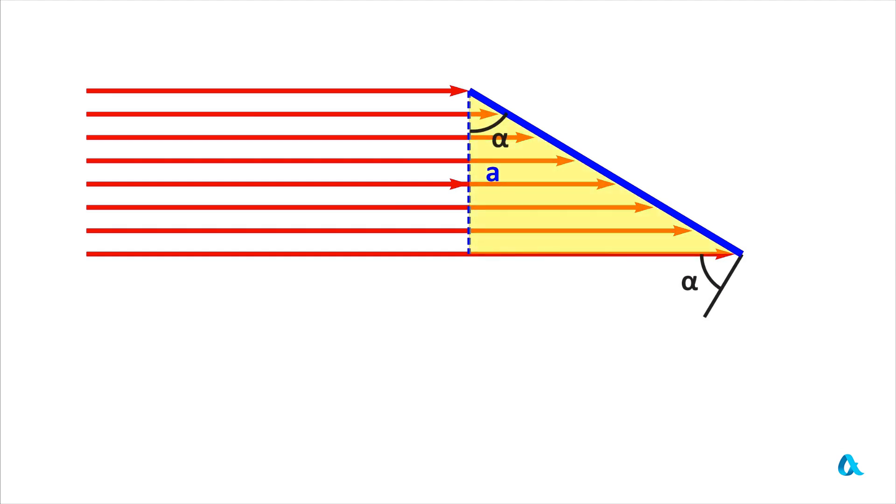In our triangle, angle alpha is located here, and therefore the width of the inclined platform is now equal to a divided by the cosine of alpha. It turns out that if the area of the light spot when falling at a right angle was S0, then now it has become equal to S0 divided by the cosine of alpha. The area has increased, so the illuminance has decreased. If previously it was equal to E0, now it has become equal to E0 multiplied by the cosine of alpha.